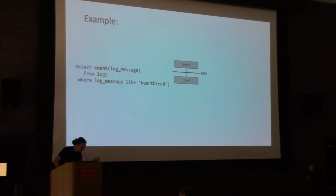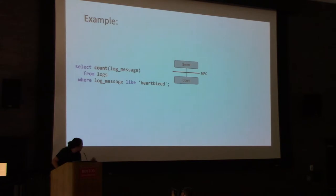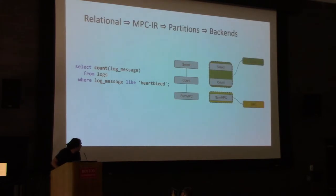As an example, if you wanted to perform an aggregation over a bunch of log files, you could either do one large aggregation by concatenating all the data, or you could locally pre-compute an aggregation using a distributed backend like Spark and then just submit the count to an MPC computation.